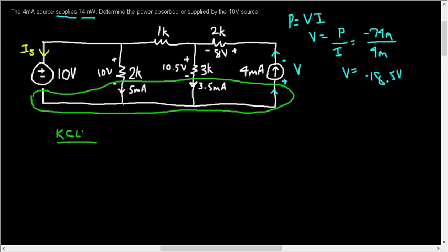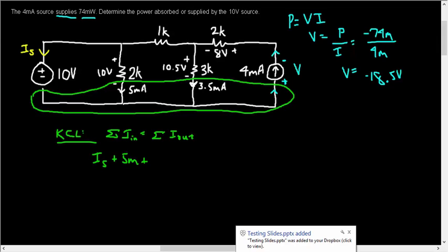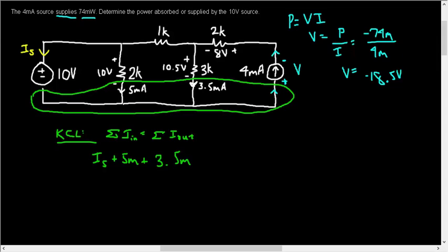KCL at the bottom node. In is equal to out. So what's entering the node? We have IS, 5 milliamps, and the 3.5 milliamps. This will be equal to the 4 milliamps from the current source. So IS will then be negative 4.5 milliamps.